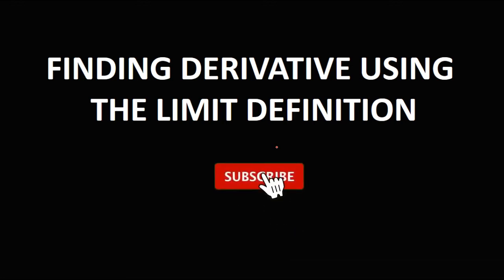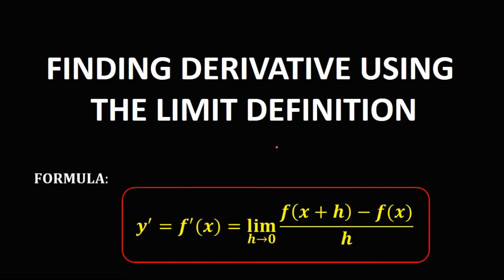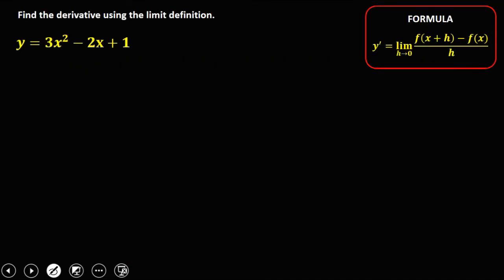Finding a derivative using the limit definition. This is the formula for solving for the derivative using the limit definition. We have the given: y equals 3x squared minus 2x plus 1.